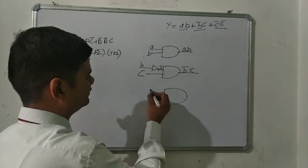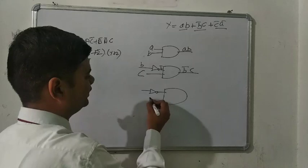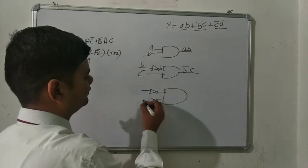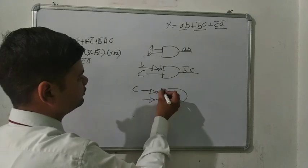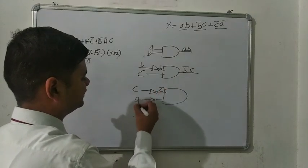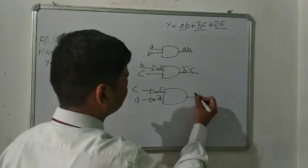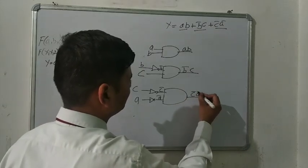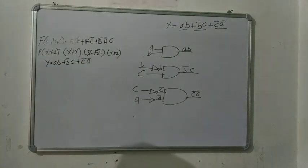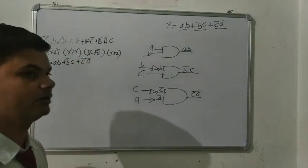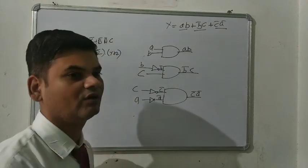For the third term C̄Ā, we are taking two NOT gates. First we take input C, which converts into C̄. Then we take input A, which converts into Ā. Then the AND gate produces the output C̄Ā. In all three terms AB plus B̄C plus C̄Ā, we are using the plus sign, and plus sign is the symbol of the OR gate.